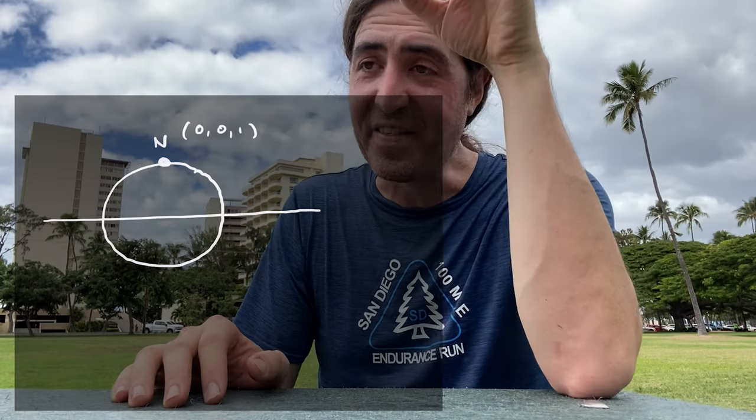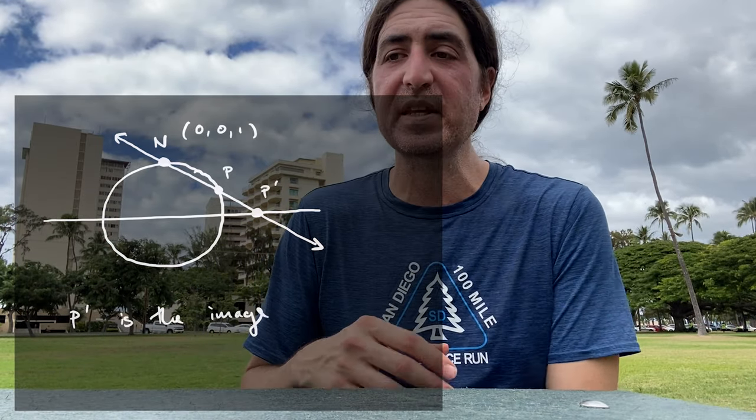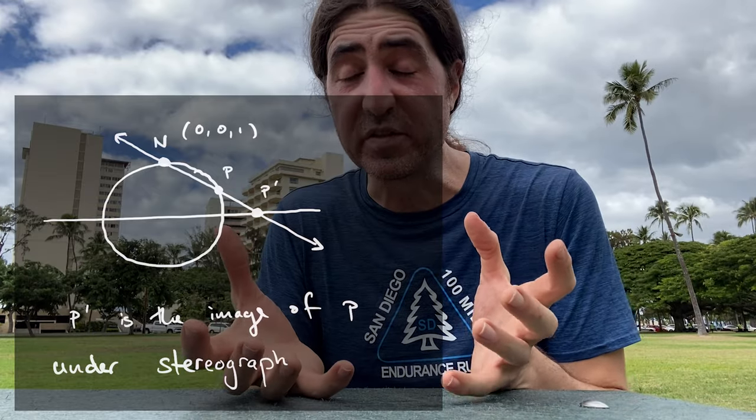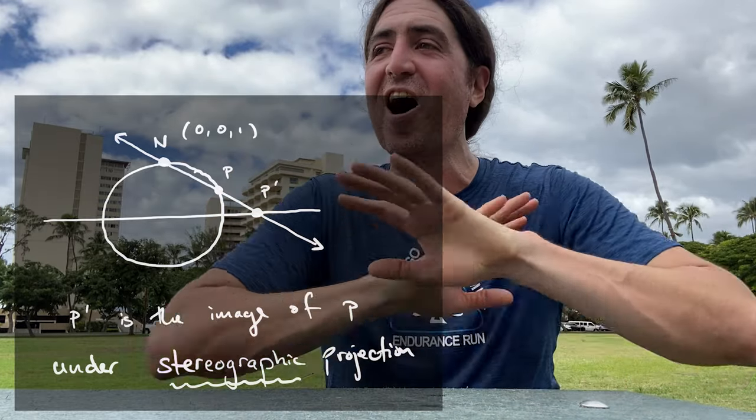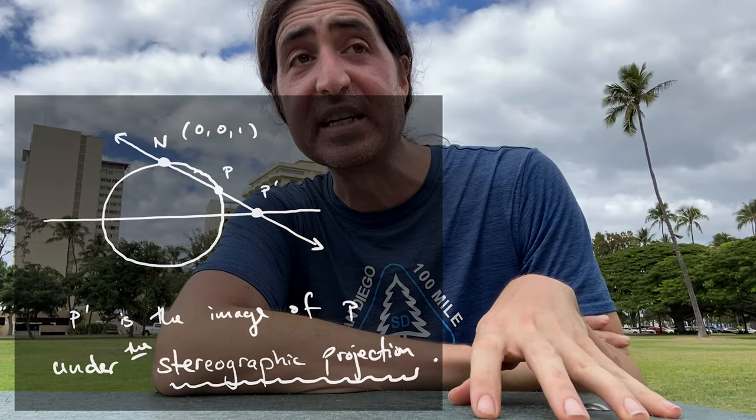The stereographic projection, if you're unfamiliar, is a way that we can map most of the two-sphere onto the plane in the following way. Take the north pole — that is to say the point (0, 0, 1) on the sphere — and then take any other point anywhere else on the two-sphere and draw the line from the north pole to that point, continuing that line through the plane at z equals zero. That defines a map from all of the two-sphere except for the north pole onto the entirety of the plane, and that map is actually a diffeomorphism. What we will be interested in today is the explicit form of that diffeomorphism and its inverse.